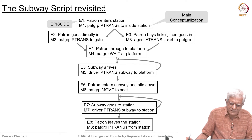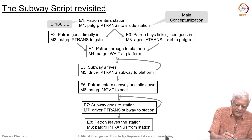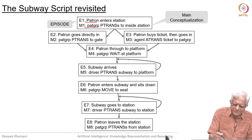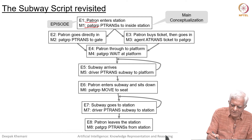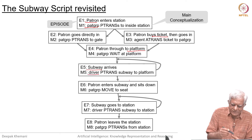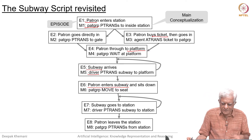We started by looking at the Subway script, which uses terms like patron group, PTrans which is part of conceptual dependency, and so on. There are things like buying a ticket, going to the platform, then a subway arrives with a driver who has brought the subway there, and then the patron enters the subway. This is typically what happens when you are going on a subway journey, or a metro or local train journey.